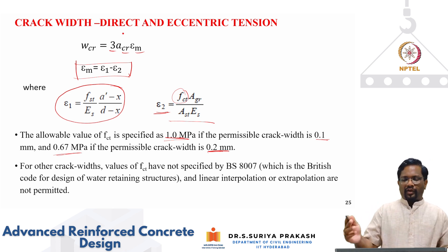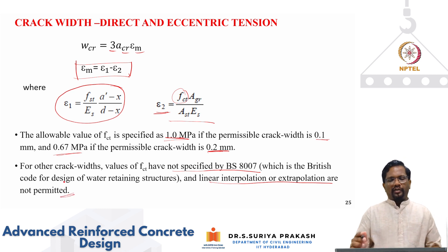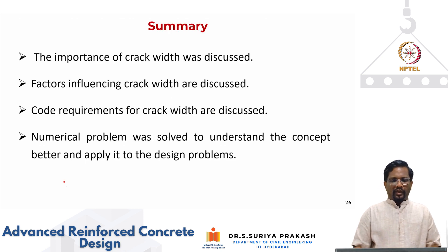For other crack widths, which is 0.3 or 0.4, FCT value have been not specified with IS. And linear interpolation or extrapolations are actually saying that not permitted. In other words, for such kind of two tension members, you have to limit your crack width to 0.2 millimeter. That is what indirectly the code is actually saying. You have to either limit the crack width to 0.1 mm or 0.2 millimeter.